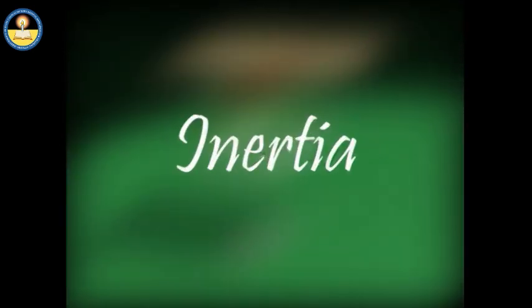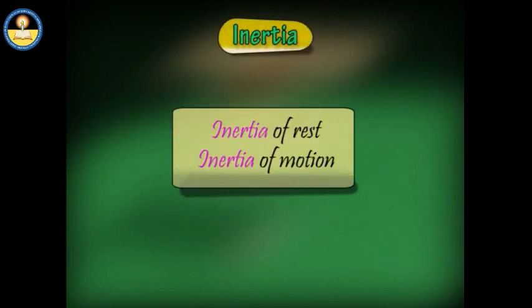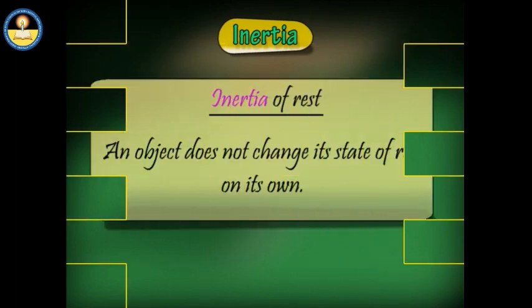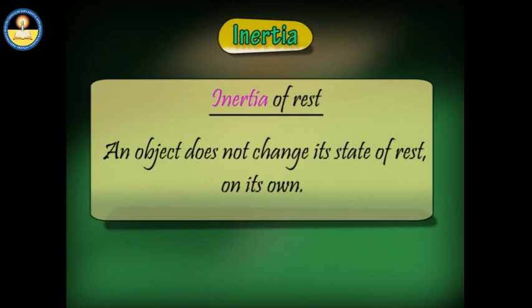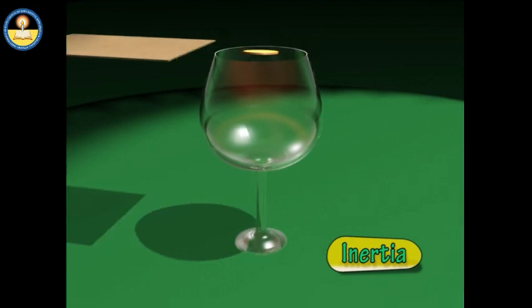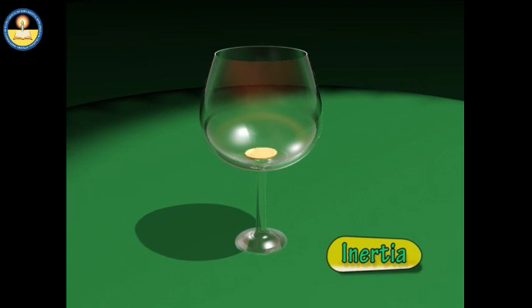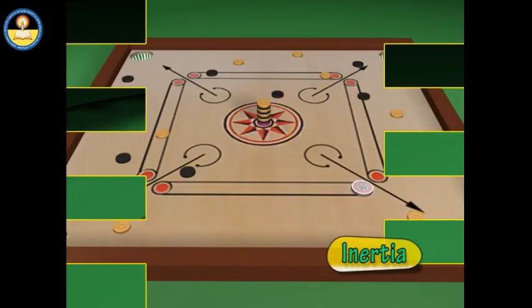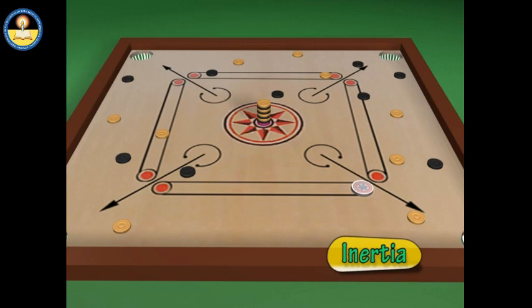Inertia can be classified as inertia of rest and inertia of motion. In inertia of rest, an object does not change its state of rest on its own. For example, a coin placed over a card on a tumbler — on flicking the card, the coin remains at rest momentarily but finally falls into the tumbler due to gravity. Similarly, in carrom, when the striker hits the lowest coin, most coins remain at rest; only the lowest one moves. The upper coins remain at rest as no net force acts on them.